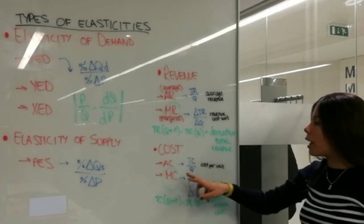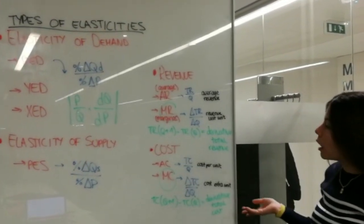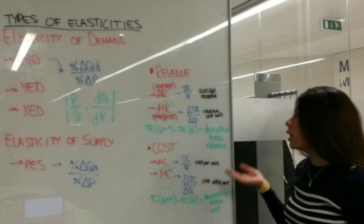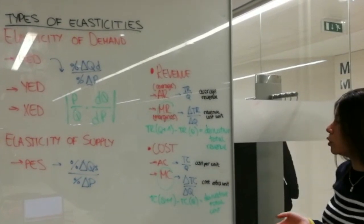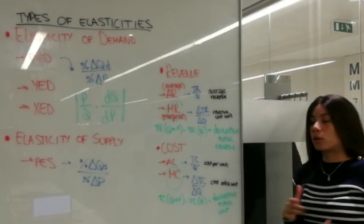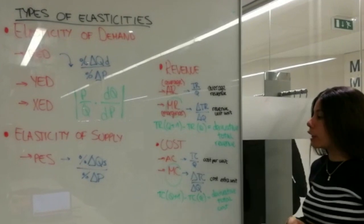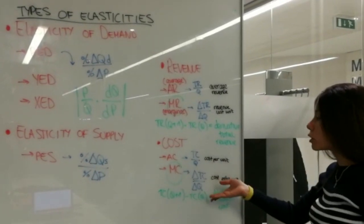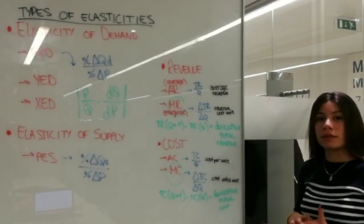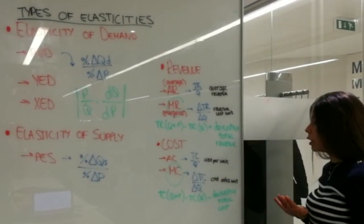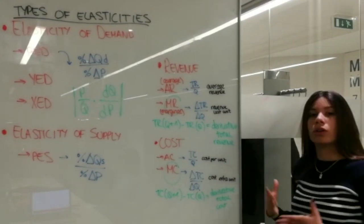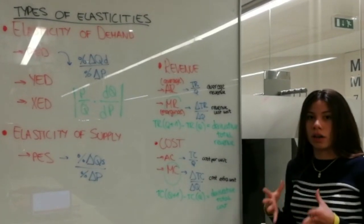In cost, we have the same thing. We have the average cost and we have the marginal cost. In the average cost, we divide the total cost by the quantity of units produced. However, in the marginal cost, we have the change of the total cost divided by the change in quantities, where we have the derivative of the total change in cost.